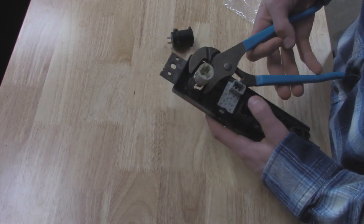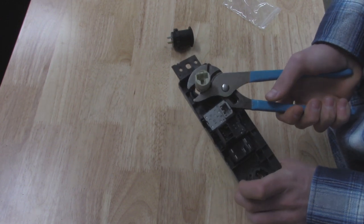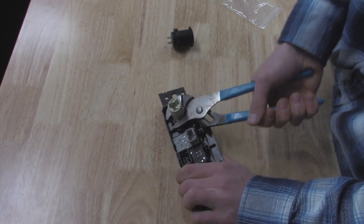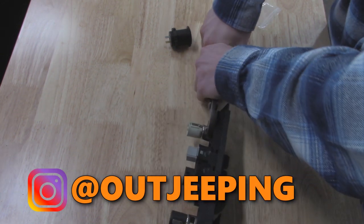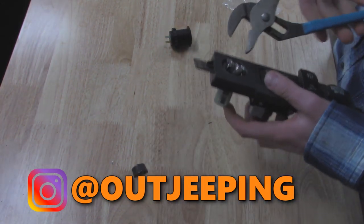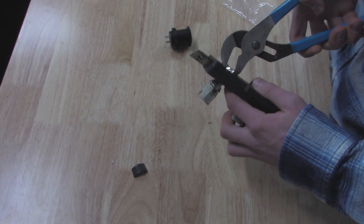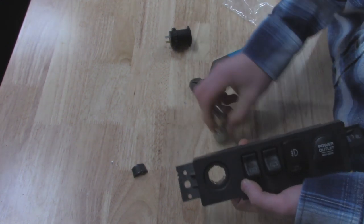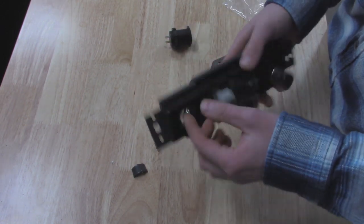All right, so basically I'm going to take some channel locks and just try to get this out. It's okay if you destroy it because you can't use it after. All right, so once you get that crimped enough it should just fall out and now we're left at the hole.